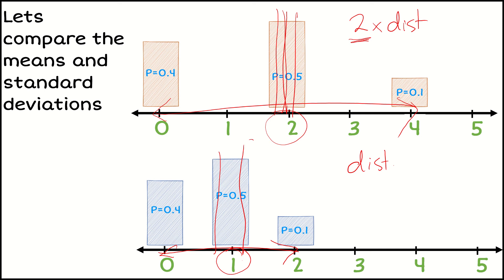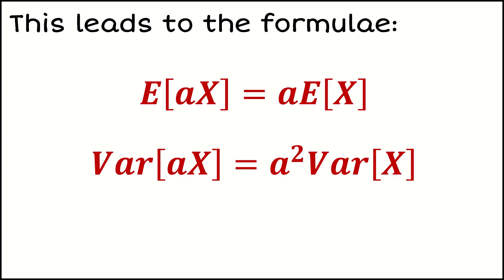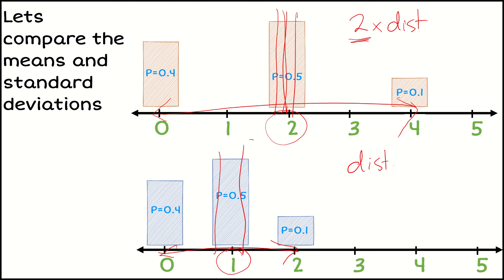So what this leads to, and this is a simplified version of the full formula, is if I multiply by a particular constant - so if I say two times my distribution - then what I'm doing to the mean is I'm saying, well, two times the old mean is going to be my new mean. So whatever I've multiplied, whatever constant I've used, I'm just multiplying that, and that's how much the mean changes by. So the mean went from one up to two, just doubled.